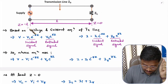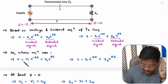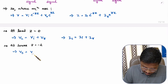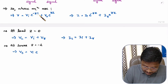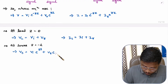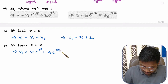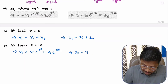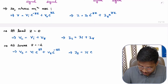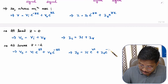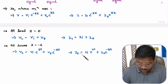At the supply side, z equals minus l. Substituting z equals minus l into the two equations, the source voltage Vs equals Vi·e^(+γl) plus Vr·e^(−γl), and the source current Is equals Ii·e^(+γl) minus Ir·e^(−γl). Now using these two sets of equations we can identify the reflection coefficient.